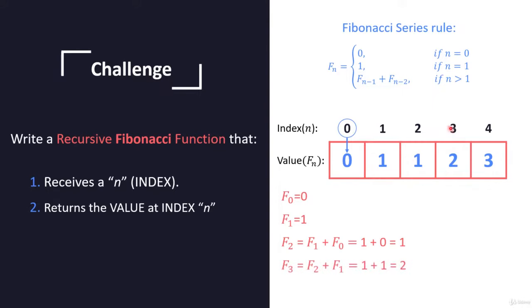If we want to find F(3) or F(4), we just take the sum of the two previous values. So F(3) equals F(2) plus F(1). We know both of them are one and one, and the total result will be two.